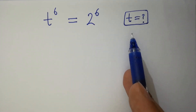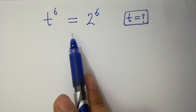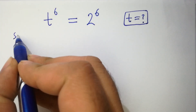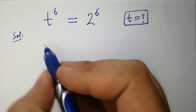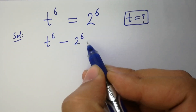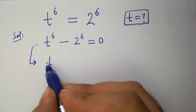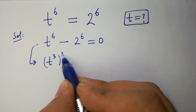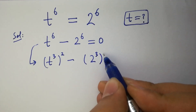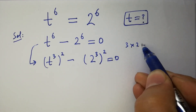Hello friends, find the value of t if t to the power 6 equals 2 to the power 6. Let's have a solution. It can be written as t to the power 6 minus 2 to the power 6 equals 0, which is the same as (t³)² minus (2³)² equals 0, since 3 times 2 equals 6.